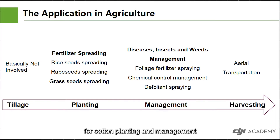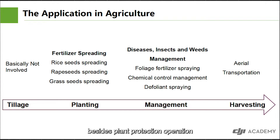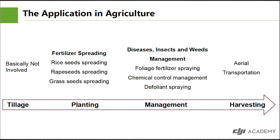For cotton planting and management, agricultural drones are used to spray growth regulators in addition to plant protection operations, and also defoliant in the later stage.